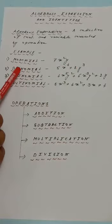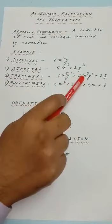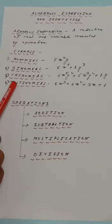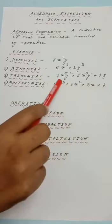Next is Trinomial. If the number of terms is 3 — first term 4x⁵y², second term 6x³y², third term 2y — it is called a Trinomial. Next is Multinomial: if the number of terms is more than 3, for example 5x³ (first term), 4x² (second term), 3x (third term), and 4 (fourth term), it is called a Multinomial.